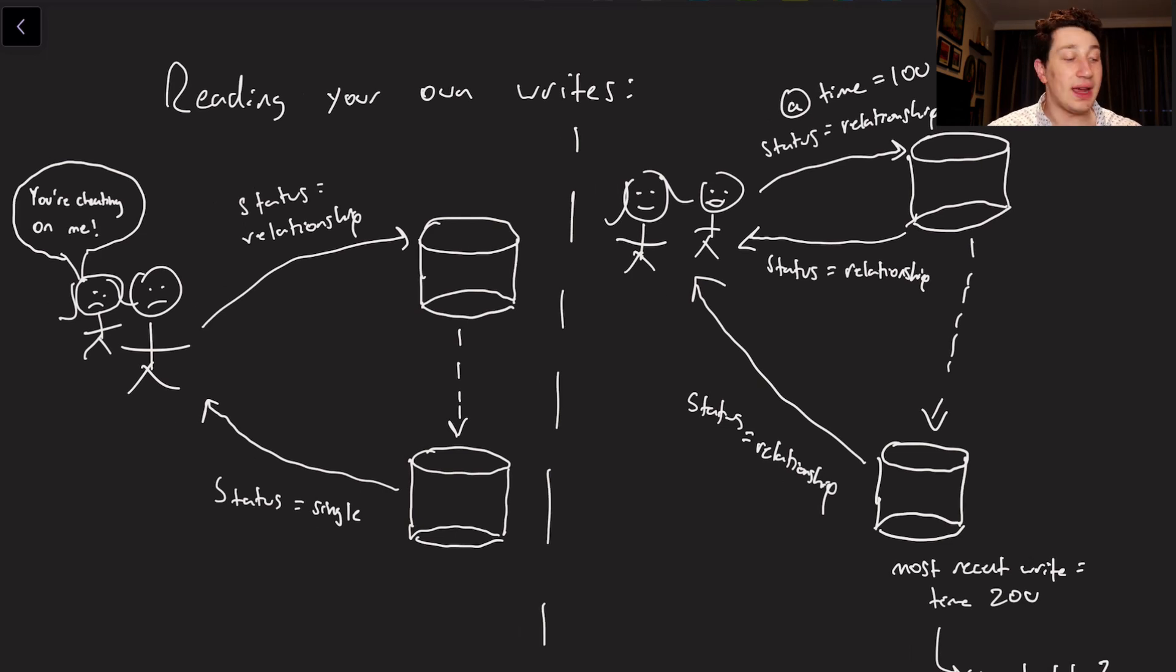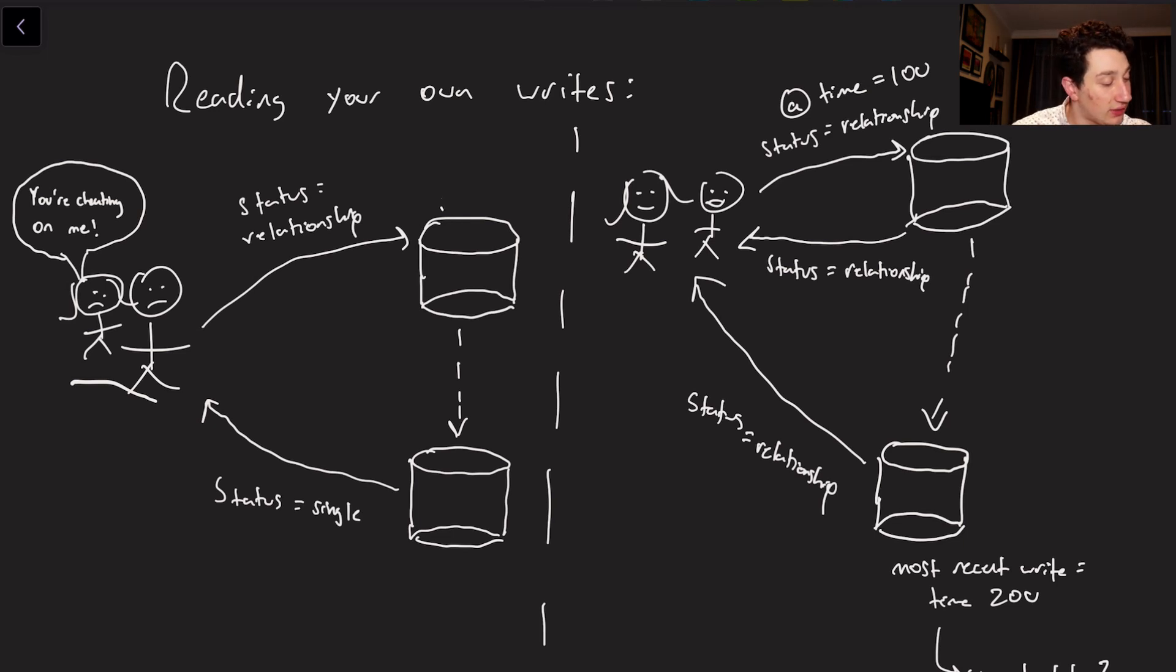So number one is reading your own writes. Wouldn't it be terrible if I and my girlfriend, who doesn't exist but it would be nice if she did, updated my relationship status on Facebook. And then of course happened to read from a replica right after, which still told me that my status was single. Now my girlfriend thinks that I'm snaking her, looking around for other girls to hook up with in my spare time, which frankly I would, and she thinks that I'm cheating on her. So obviously if we had strong consistency, this wouldn't be an issue. I would read from the replica and it would say that I was in a relationship.